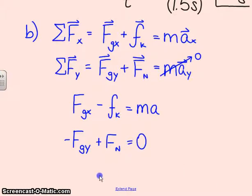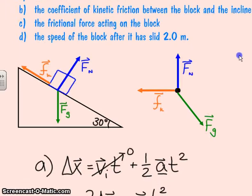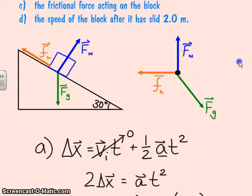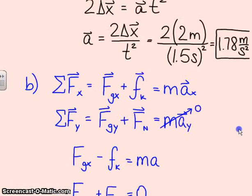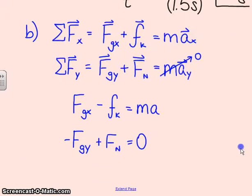And now, these two equations that I've written here are only magnitudes. So when I plug numbers, I'm only putting in positive numbers. I've already taken care of direction with these minus signs. Now, the thing I'm looking for is the coefficient of kinetic friction. I'm also looking for the frictional force acting on the block. That's part c. I'm going to end up solving for both of them at the same time. As a matter of fact, I think I'm going to do part c first.